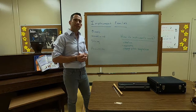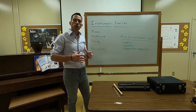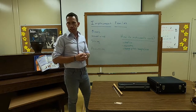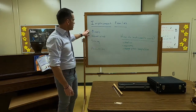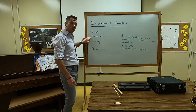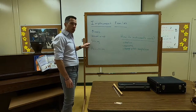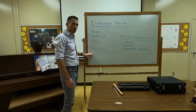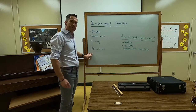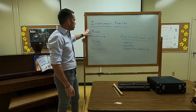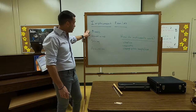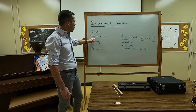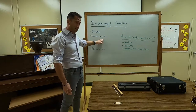Welcome back to Music Class Kids. We're talking about the instrument families: brass, woodwind, string, and percussion. Last time we talked about the brass family, so today we're going to move on to the woodwinds.